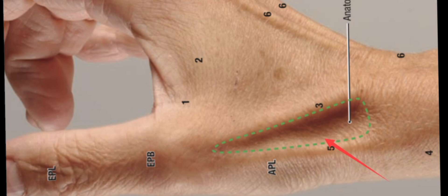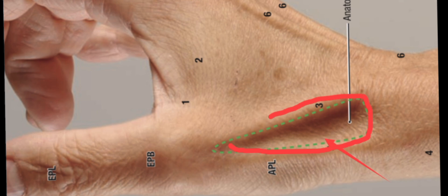You can easily appreciate the anatomical snuff box in your own hand when you extend the thumb. By extending the thumb, you will see a triangular depression on the radial dorsal aspect of the hand. This is the anatomical snuff box.